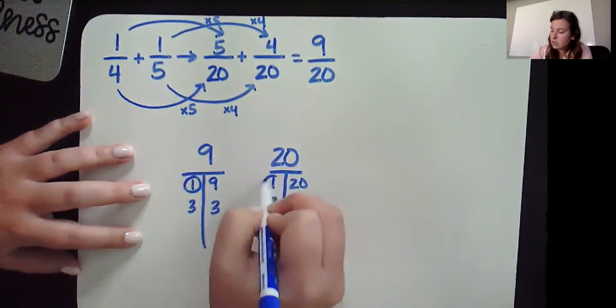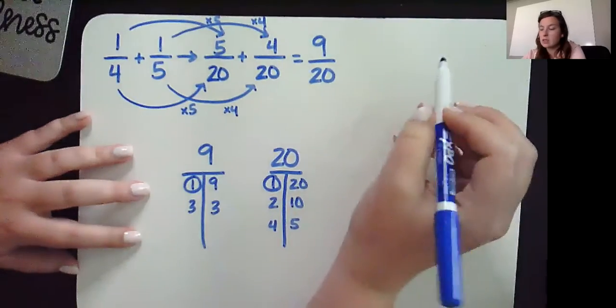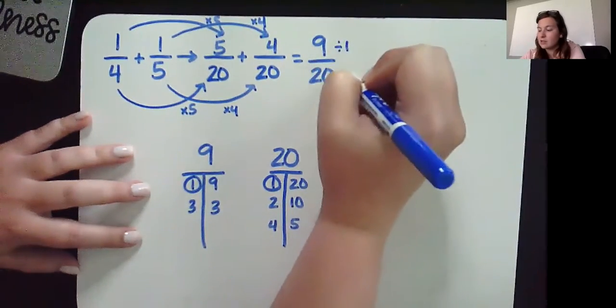The only factor these guys have in common is 1, which means it is already in simplest form.